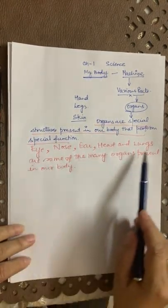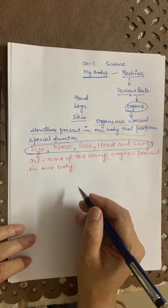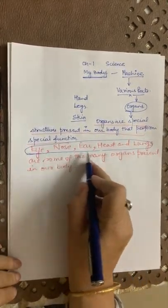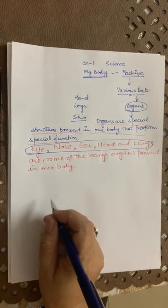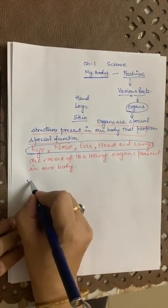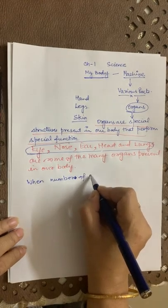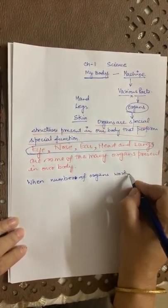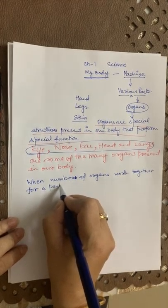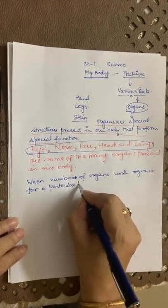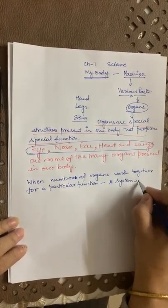So when a number of organs work together, they form a system. When a number of organs work together for a particular function, a system is formed.